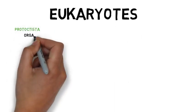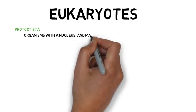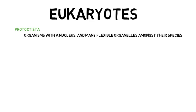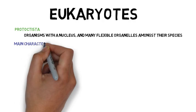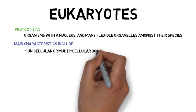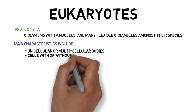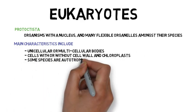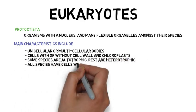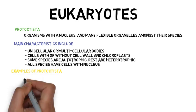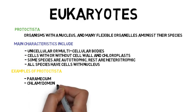Eukaryotes — Protoctista are organisms with a nucleus and many flexible organelles among their species. Some have chloroplasts and cell walls like plants, and some are like animal cells without these distinguishing characteristics. Their main characteristics include unicellular or multicellular bodies, cells with or without cell walls and chloroplasts, some species are autotrophic, the rest are heterotrophic, and all species have cells with a nucleus. Examples include Paramecium, Chlamydomonas, and seaweed.